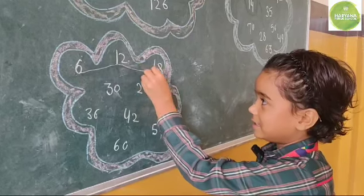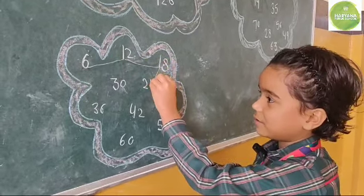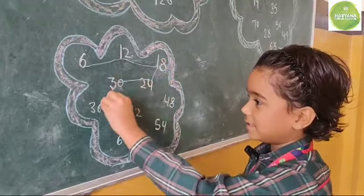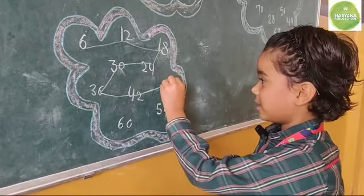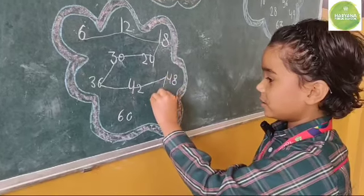6 times 2 is 12, 6 times 3 is 18, 6 times 4 is 24, 6 times 5 is 30, 6 times 6 is 36, 6 times 7 is 42, 6 times 8 is 48, 6 times 9 is 54, 6 times 10 is 60.